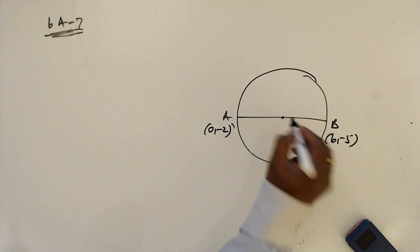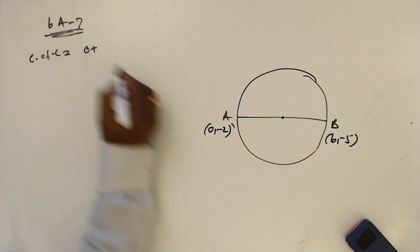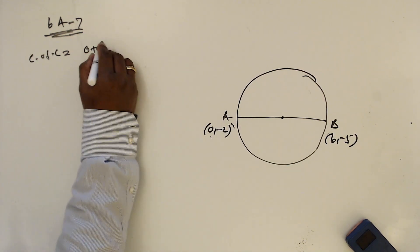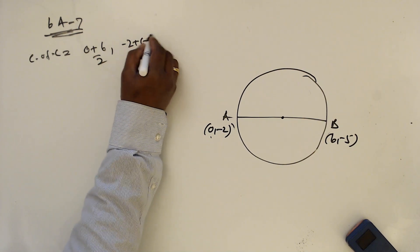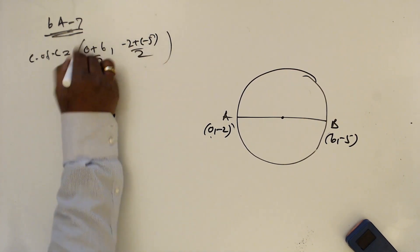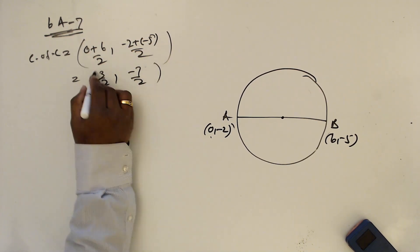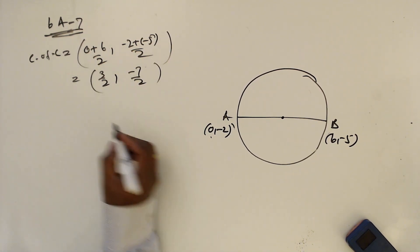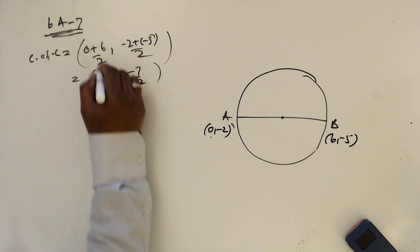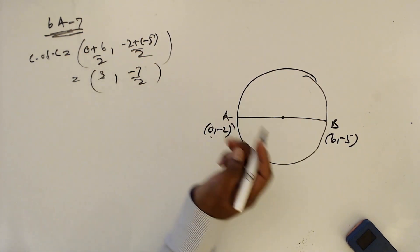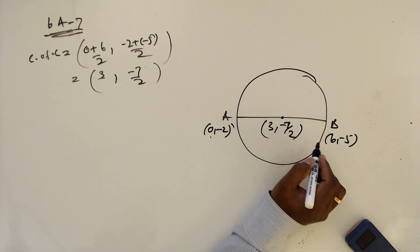We want to find the center of the circle. The center is the midpoint: (0 + 6) / 2 and (-2 + (-5)) / 2. The x-coordinate is 6/2 = 3. The y-coordinate is -7/2. So the center of the circle is (3, -7/2).